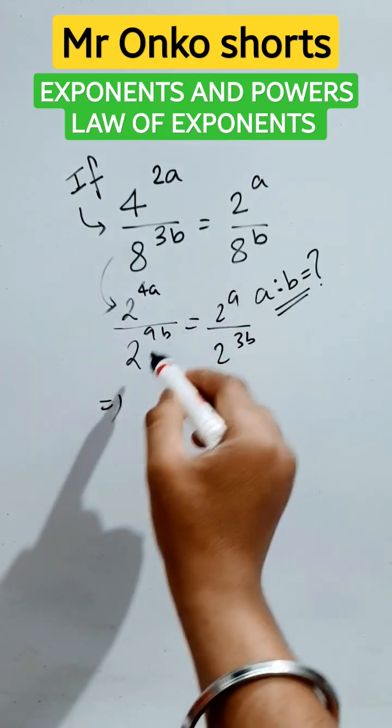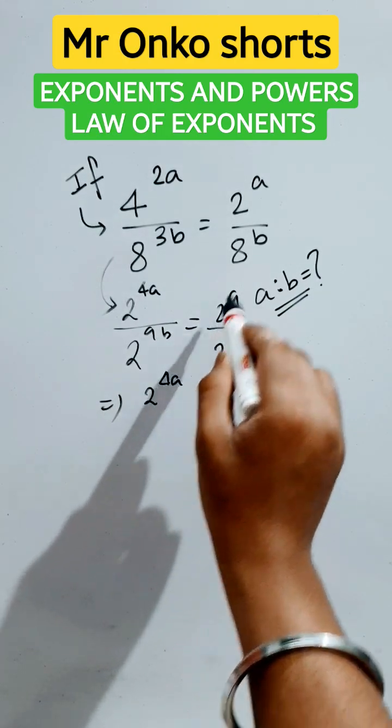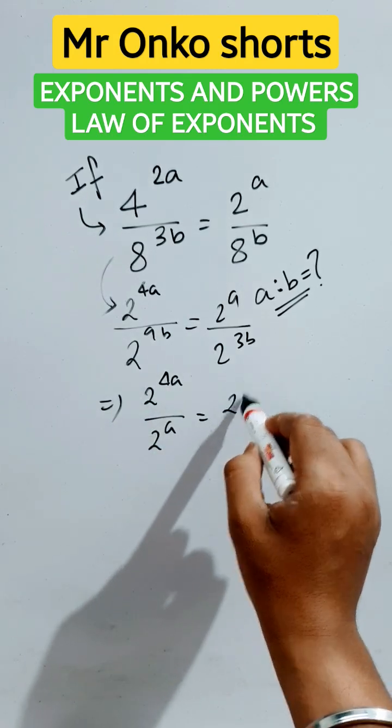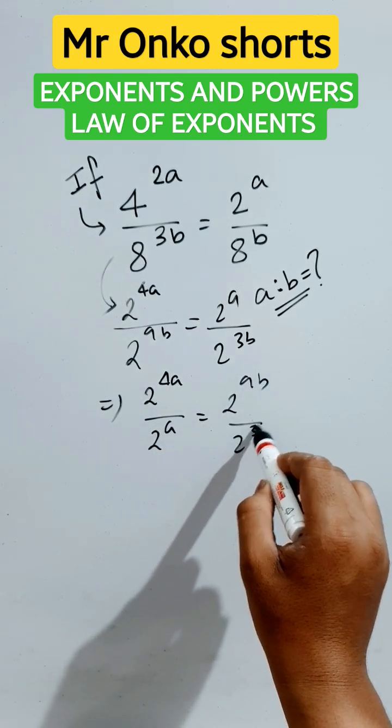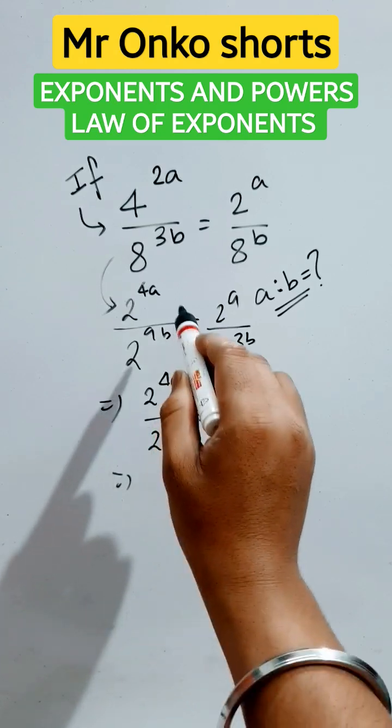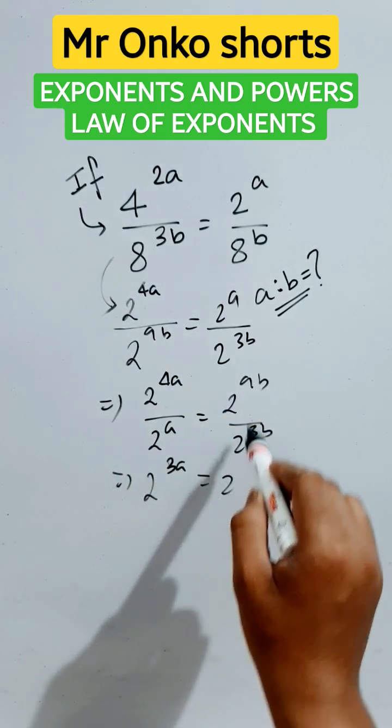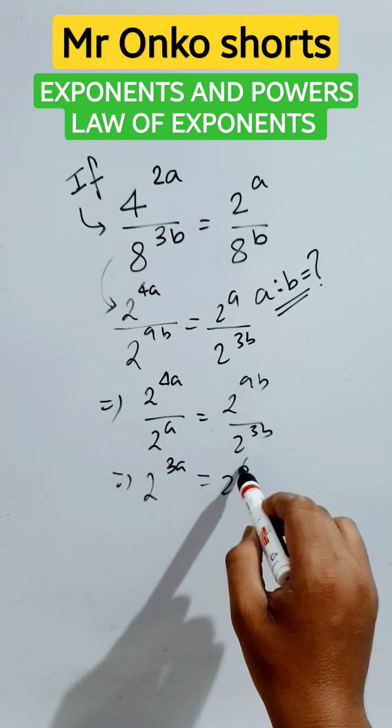Now, we will change the sides of all the terms having exponent a to similar sides and same for the other parts. So, according to the indices law, 2 to the power 4a minus a, that is 3a, equals 2 to the power 9b minus 3b, that is 6b.